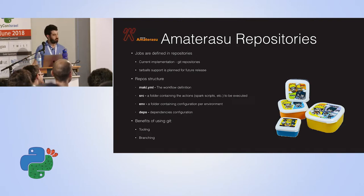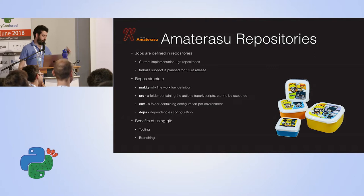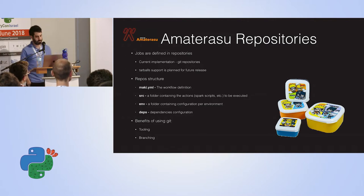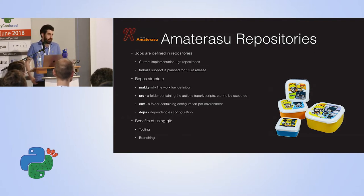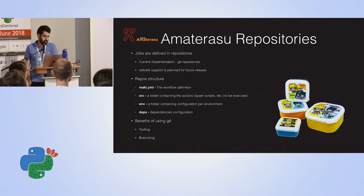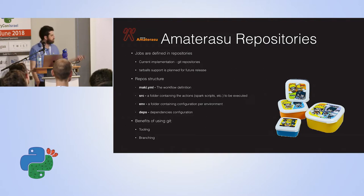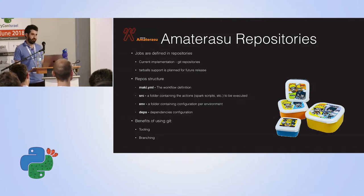So how does it work? The repositories are pretty simple. We have a YAML file that describes the workflow — the maq.yaml. We have a folder for source code, an environment folder for defining different environments like development and testing. You can define different environments for your Hadoop cluster, for one set of production machines, or run it somewhere else entirely. And dependencies for everything you need to run your job — any Python libraries, packages, Scala libraries, or whatever. And why Git? That's obvious — why wouldn't you?